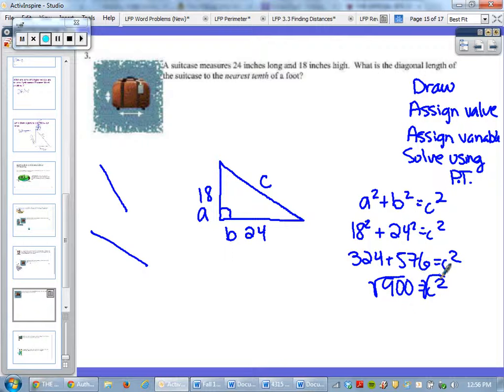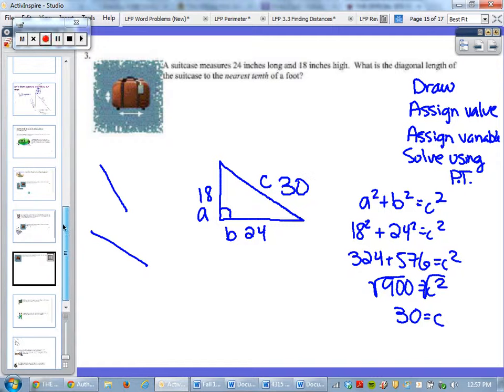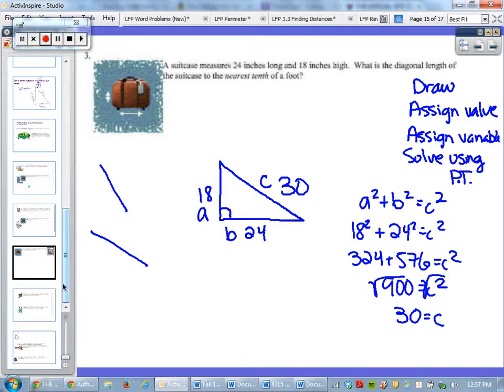Again, this problem is not hard once we can pull it out of the actual question and into a drawing. That's why drawing is so important. If we just pull out of the drawing and ignore the word problem, if I just give you this triangle with 18 and 24 as side lengths, you would easily plug that in and find C. That's not hard. It gets more difficult when you have to pull out of the problem what exactly you're dealing with.